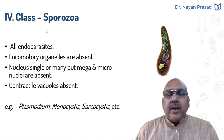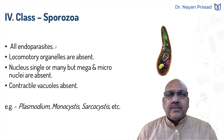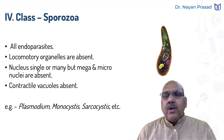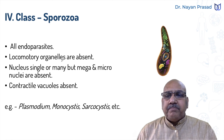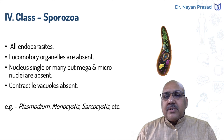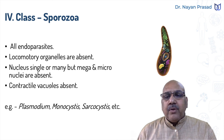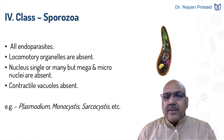Next comes class Sporozoa. This group includes exclusively endoparasites — all are endoparasites, and no member of this group is free-living. Locomotory organelles are absent in them; cilia, flagella, and pseudopodia are not found. Nucleus may be single or many, but meganucleus and micronucleus are absent — if more than one nuclei are present, all are similar. Contractile vacuoles are also absent, as all are endoparasites. Common examples are Plasmodium, Monocystis, and Sarcocystis.